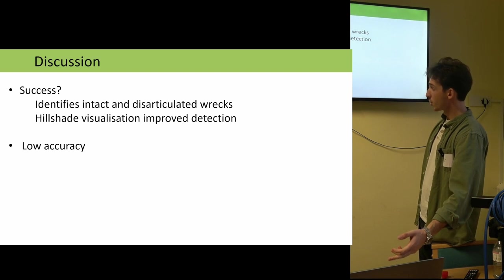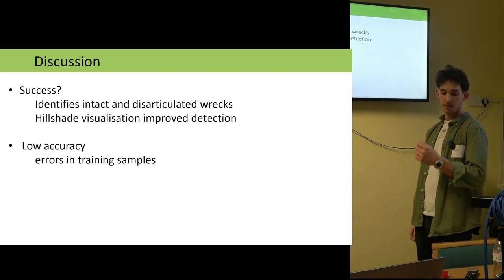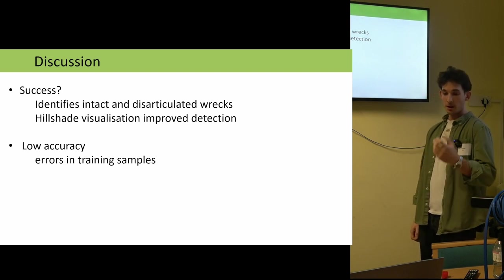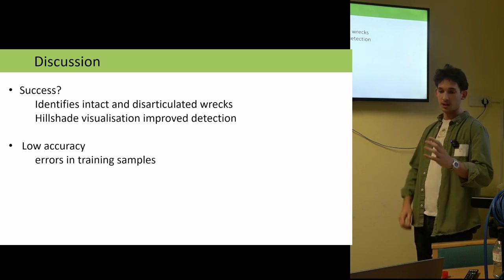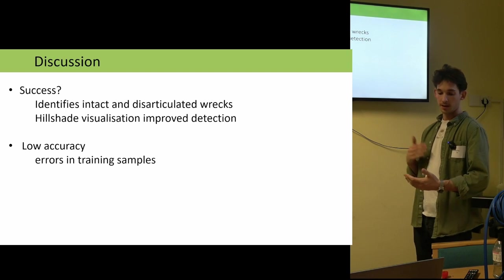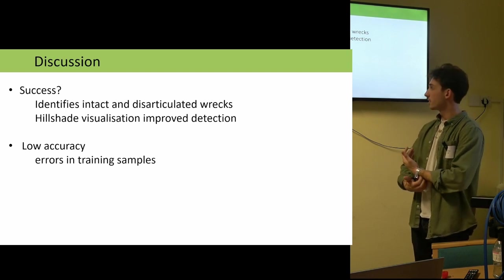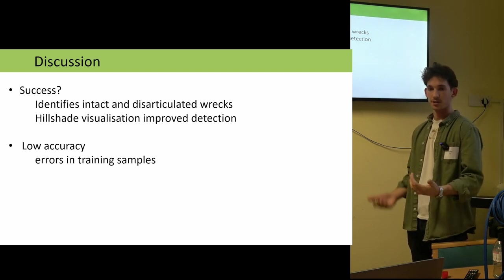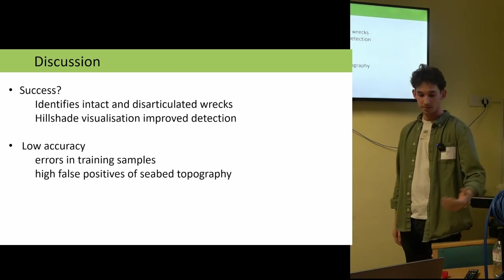There were some problems, however, with low accuracy. And the biggest thing I think is coming from errors in the training samples I was able to later identify. On close review of the image chips that are used to train the models, there was actually inclusions of plain background seabed topography in the shipwreck training samples as well. This is a problem that I tried to get rid of, but wasn't totally able to eliminate. So this is starting to introduce errors and inaccuracy into the detection itself, which is resulting in high false positives, seabed topography.